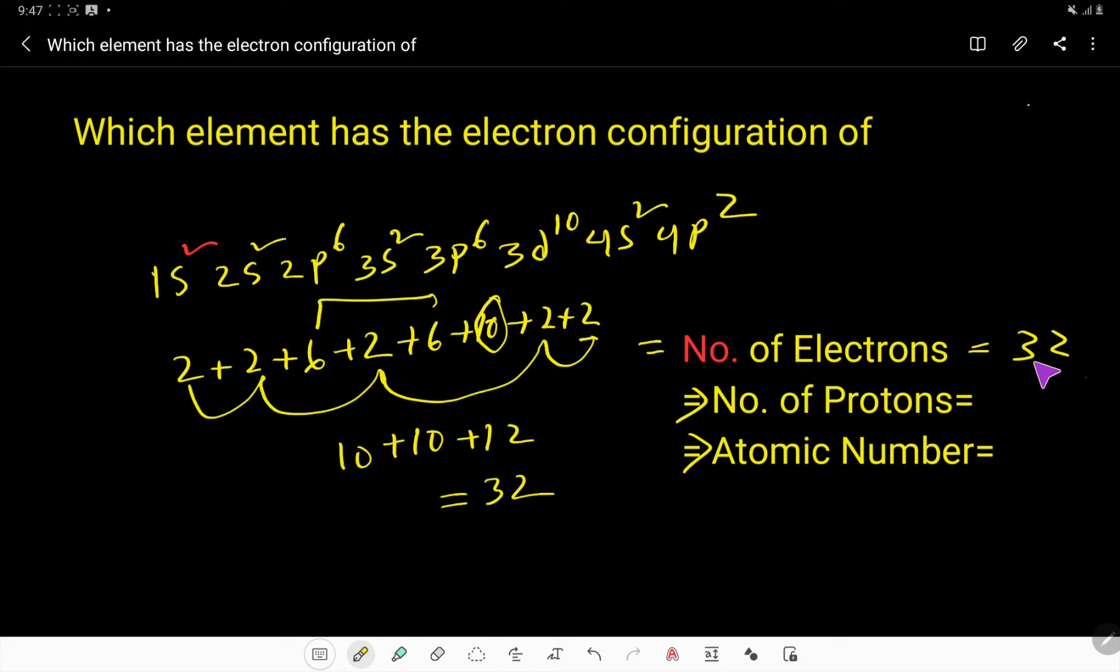The number of electrons is 32, that means it will have 32 protons, because the charge of protons is positive and the charge of electrons is negative. In a neutral atom, the number of protons and electrons will be equal. We also know that the number of protons is called the atomic number.